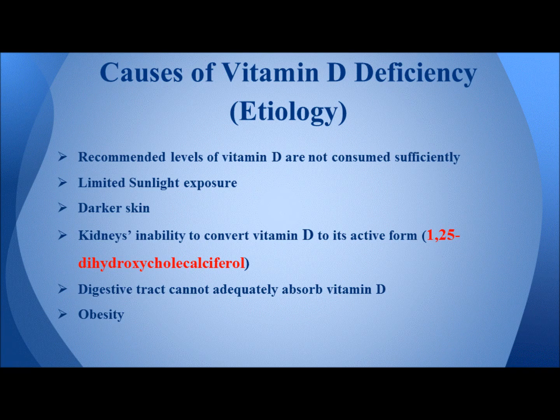Darker skin is another cause. The pigment melanin reduces the skin's ability to make vitamin D in response to sunlight exposure. So people who have darker skin need to expose their skin to sunlight for a longer period of time.